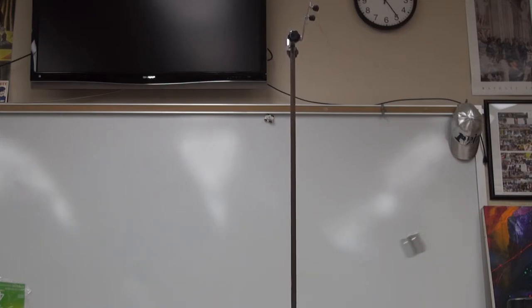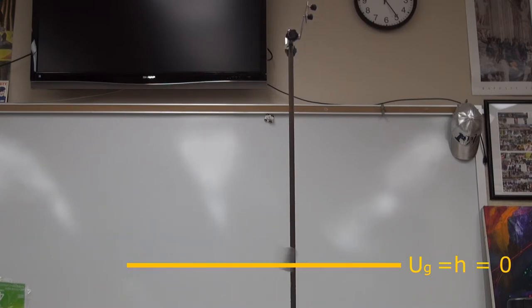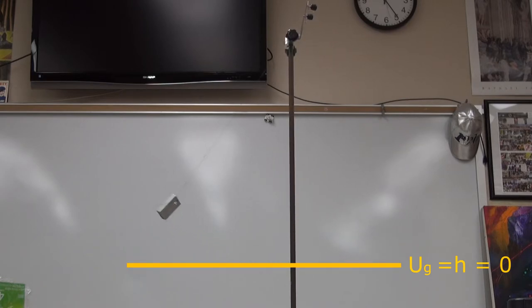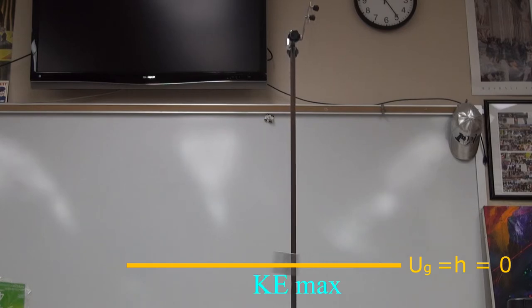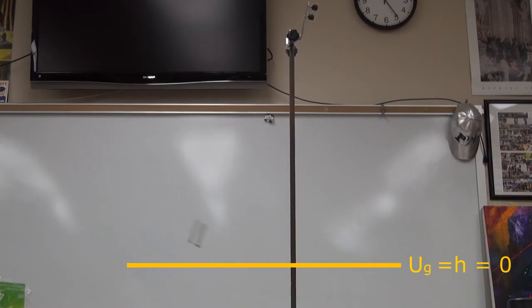As the pendulum swings back and forth, the total mechanical energy of the mass is a mixture of gravitational potential energy and kinetic energy of motion. We put the zero of gravitational energy at the lowest point in the motion of the center of mass. Along this line, H equals 0 and U sub G equals 0. The kinetic energy is maximum when the mass passes through its lowest point, and the gravitational energy is maximum when the mass swings to its highest points.